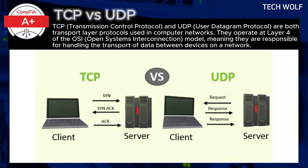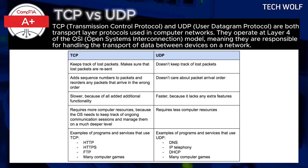This makes UDP ideal for situations where speed is more important than perfect accuracy. For example, in live video streaming or online gaming, it's better to keep the flow of data continuous. Even if a few packets are lost, retransmitting lost data could introduce delays that would make the stream or game unplayable. In these scenarios, a little missing data doesn't ruin the overall experience, but delay would.